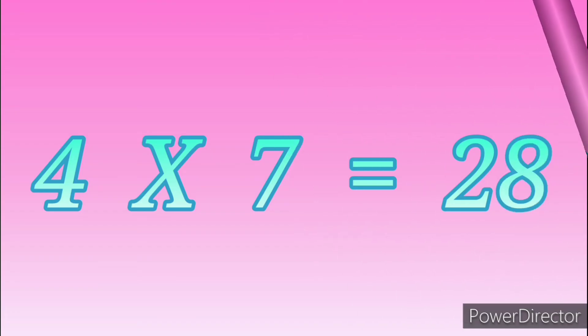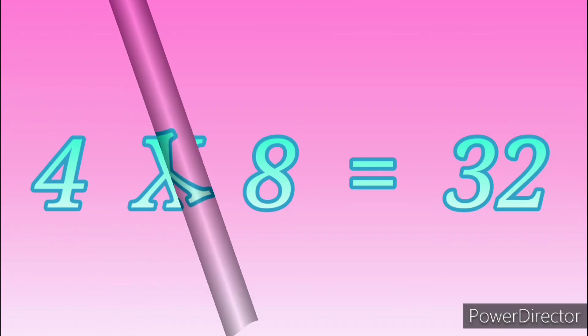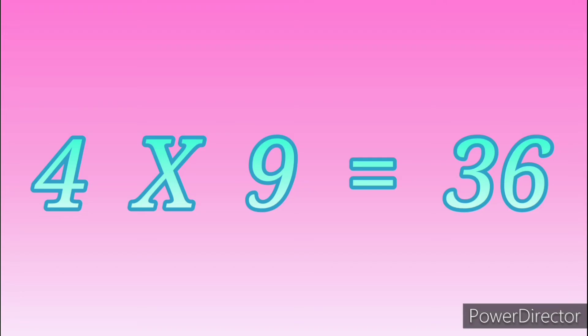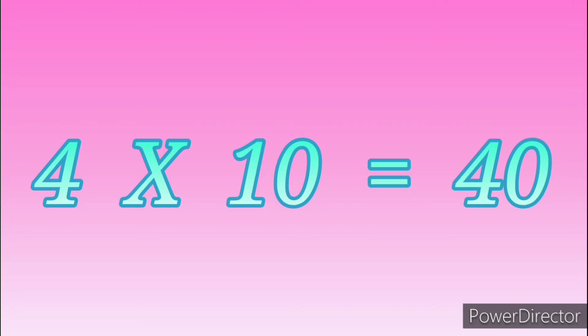4 sevens are 28. 4 eights are 32. 4 nines are 36. 4 tens are 40.